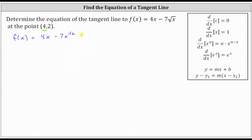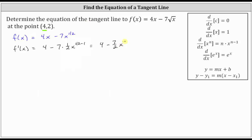Now let's work on determining the derivative function. f'(x) is equal to the derivative of 4x, which is 4, minus the derivative of 7x to the power of 1/2, which is 7 times the derivative of x to the power of 1/2, which is 1/2 times x to the power of 1/2 minus 1. Simplifying, we have 4 minus (7/2) x to the power of negative 1/2.